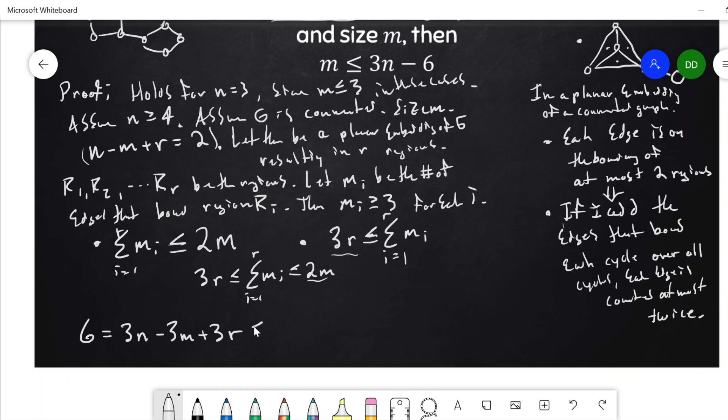So what that means is I can say this is less than or equal to three n minus three m. And three r is less than or equal to two m. So that's three n minus m. So m is less than or equal to three n minus six. And that's what I wanted. m is at most three n minus six for any planar graph.